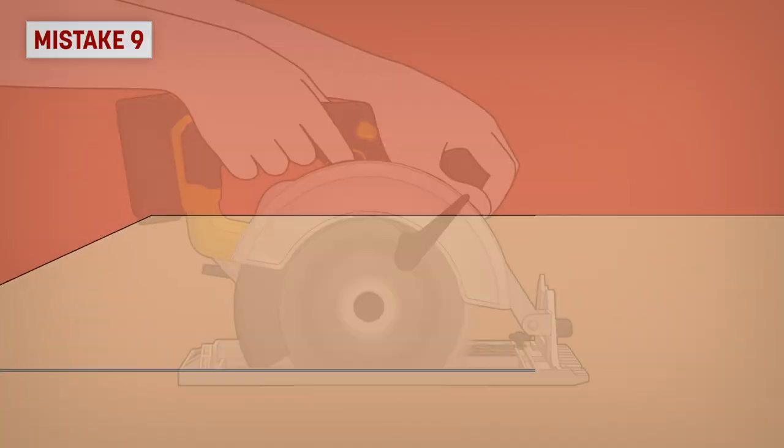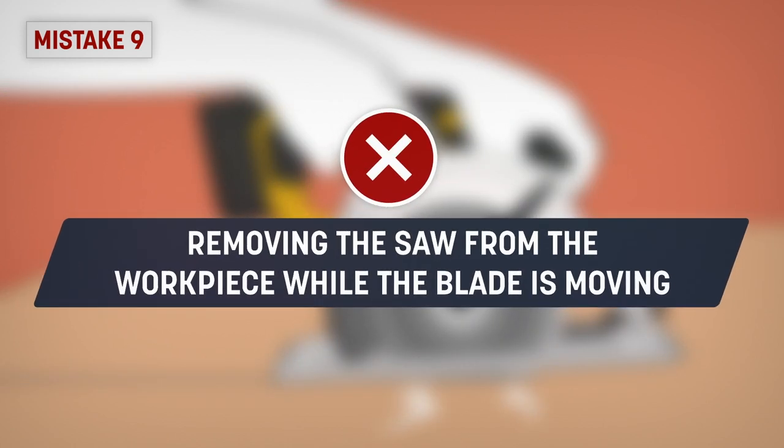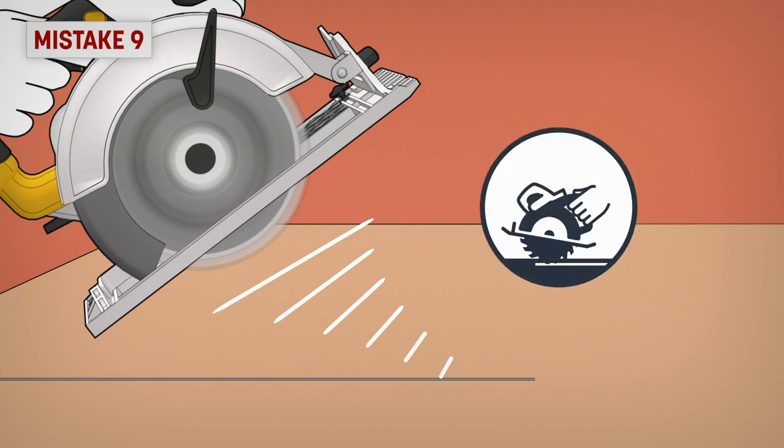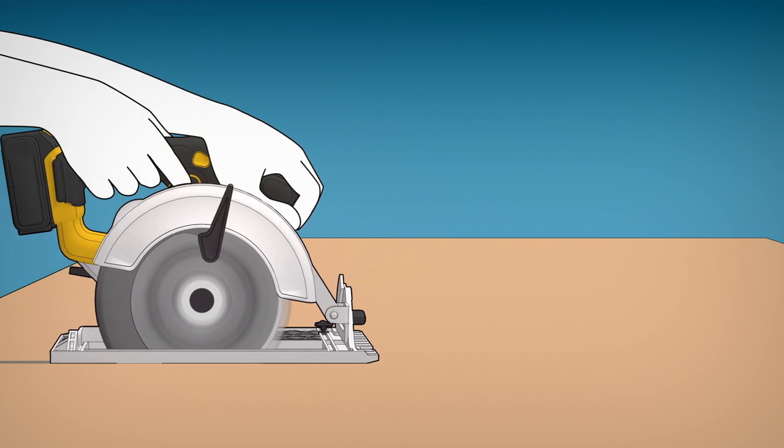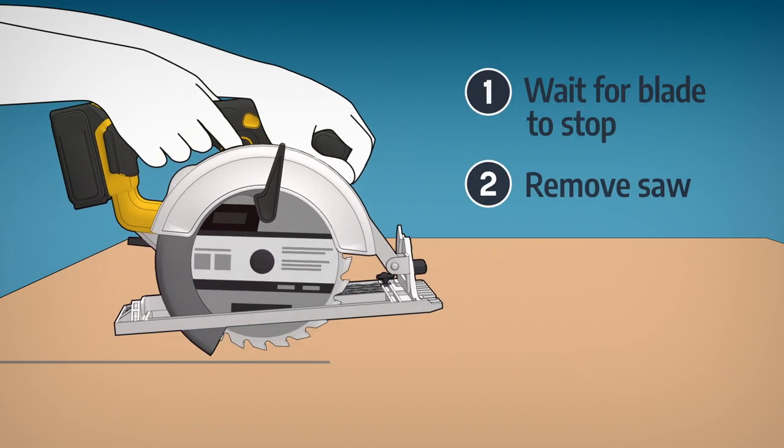Mistake 9: Removing the saw from the workpiece while the blade is moving. If the blade is still moving, it can dig into the wood, causing the blade to climb out of the kerf and jump back at you. Always hold the saw still until the blade has stopped moving, then remove the saw.